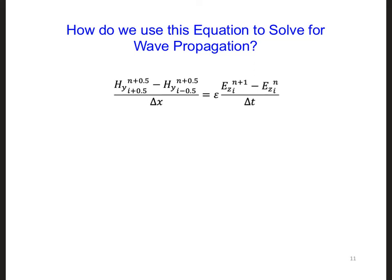If you look at the time step index for each of these components in this equation, you'll see we have Ez at time step n+1 here. The Hy's are at n+1/2, so that's a half step earlier in time compared to Ez, and Ez also at time step n.